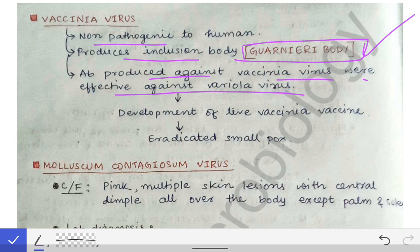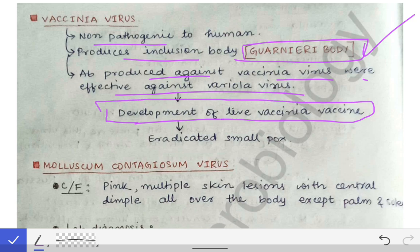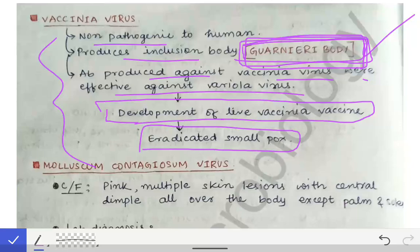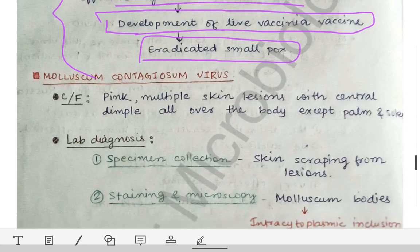Scientists realized that antibodies produced against vaccinia virus were also effective against variola virus, so they developed a live attenuated vaccinia virus vaccine against smallpox. If you want to remember one key point about vaccinia virus: the inclusion body of variola virus is the Paschen body, while the inclusion body of vaccinia virus is the Guarnieri body.